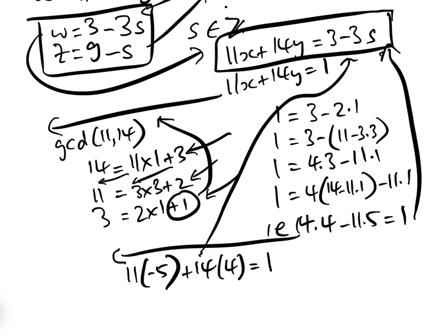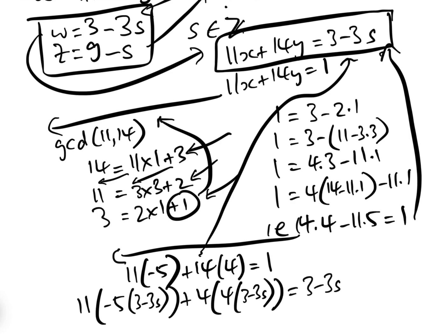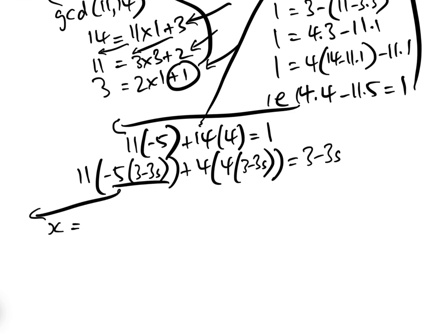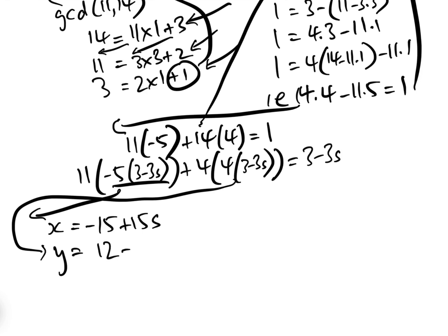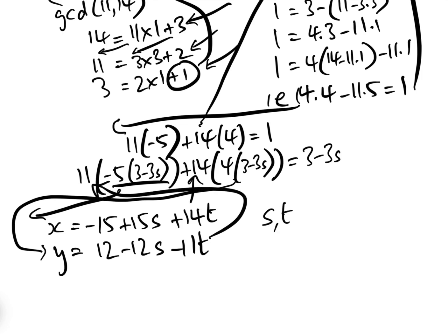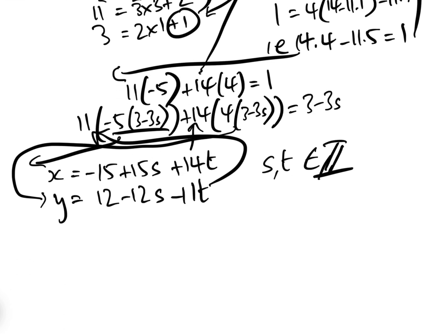Comparing 11×(−5) + 14×4 = 1 to our equation, we need to solve not equals 1 but equals 3 − 3s. So multiplying everything by (3 − 3s) gives a particular solution: x = −15 + 15s and y = 12 − 12s. Therefore the general solution is x = −15 + 15s + 14t and y = 12 − 12s − 11t, for some s and t in the integers. And we already know z = 9 − s.